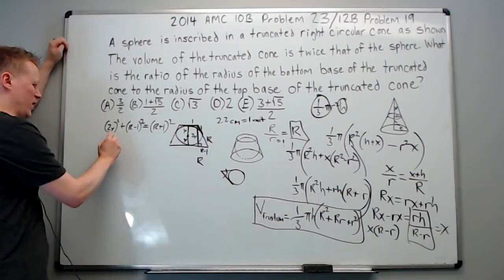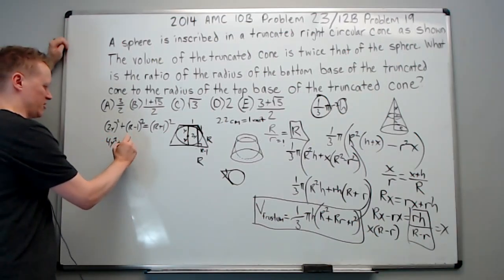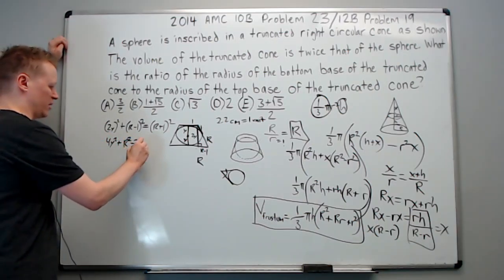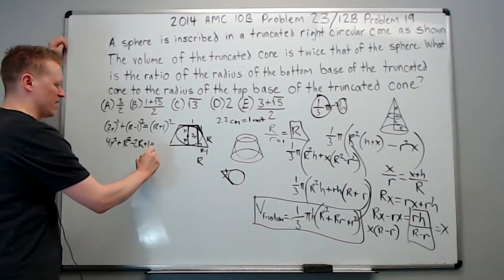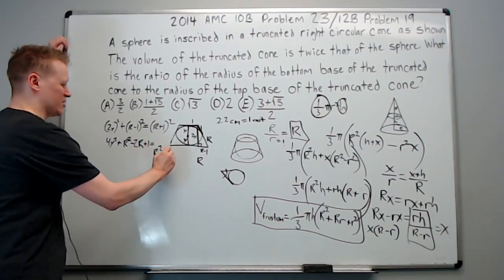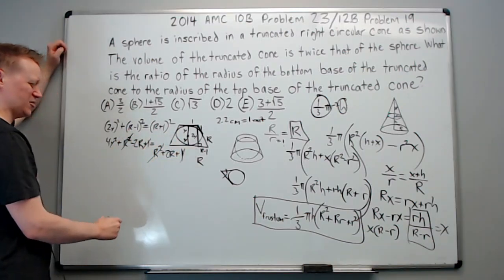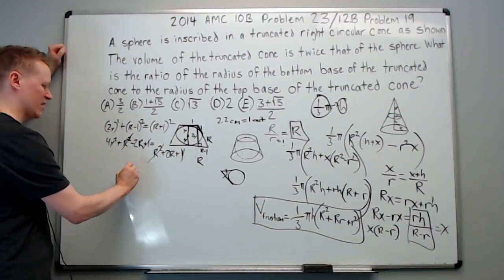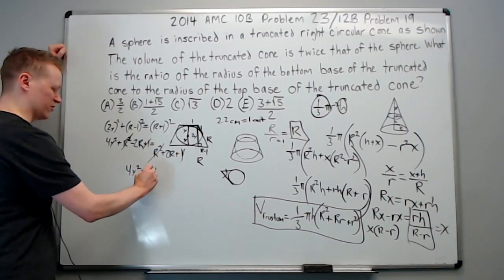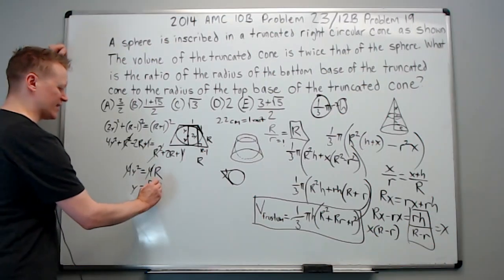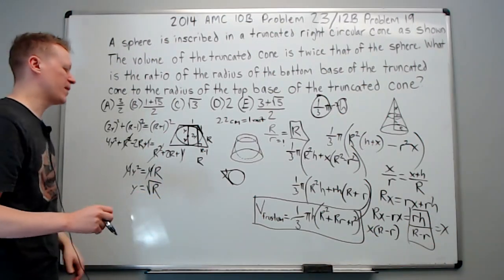You're going to get 4y squared plus big R squared minus 2R plus 1 equals R squared plus 2R plus 1. The R squareds and 1s all cancel because they're the same on both sides. 4y squared after moving the 2R over is 4R. Cancel the 4s. y then is equal to the square root of R.